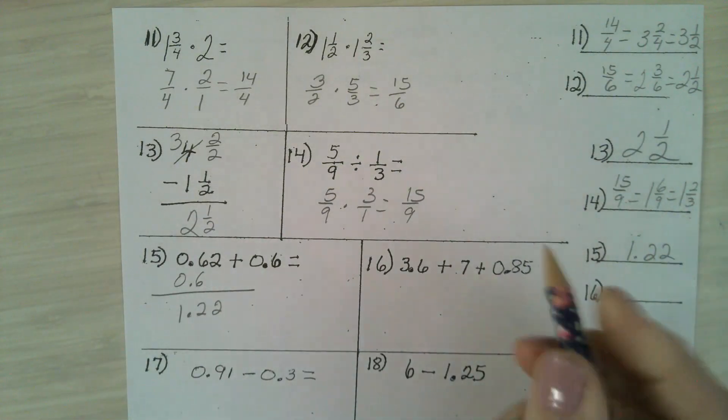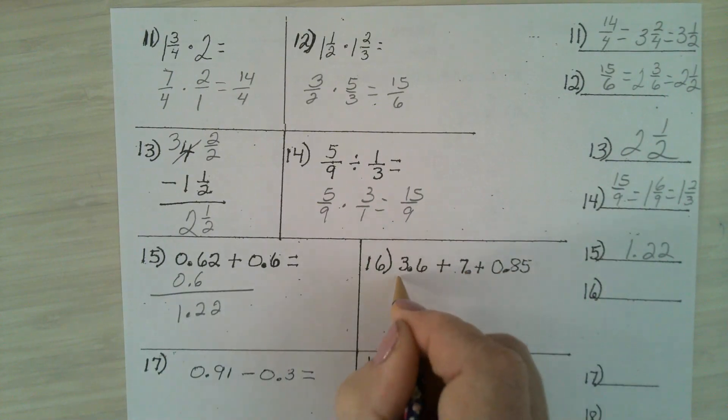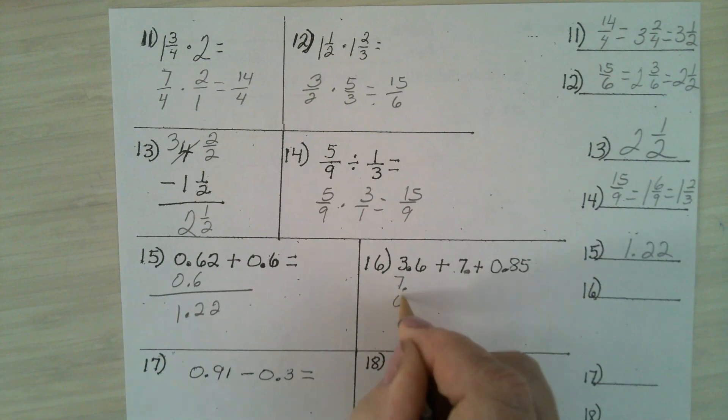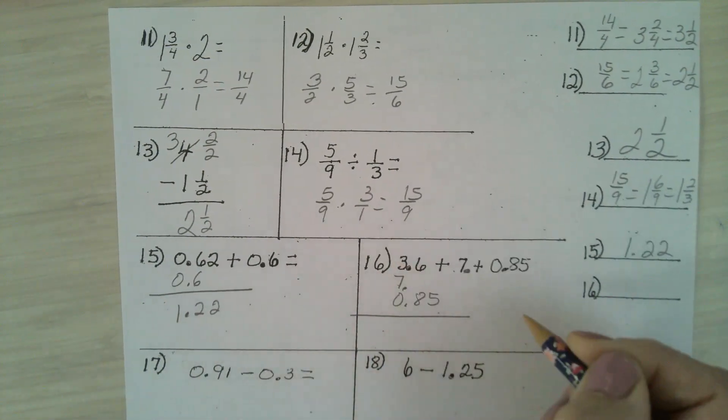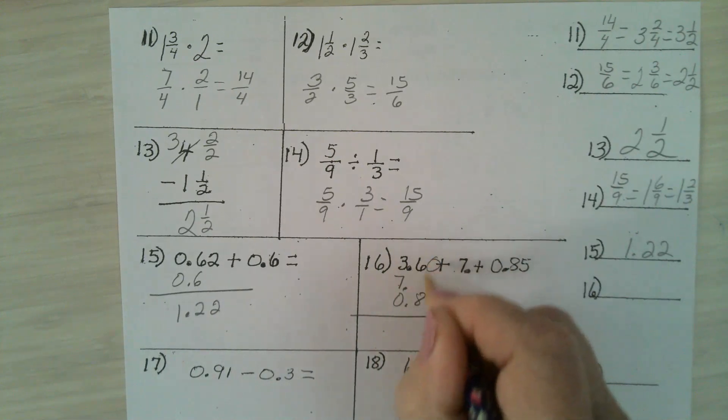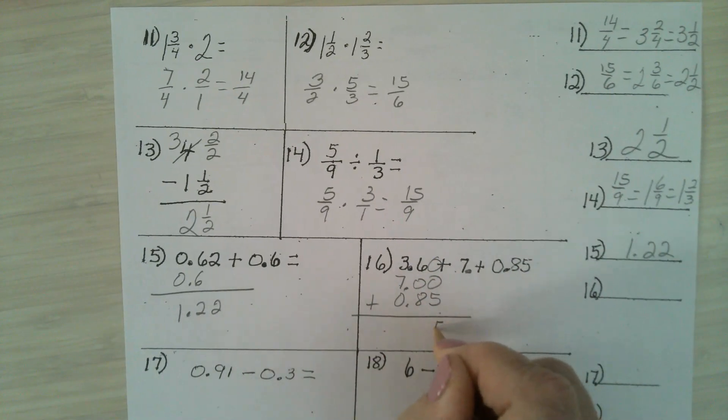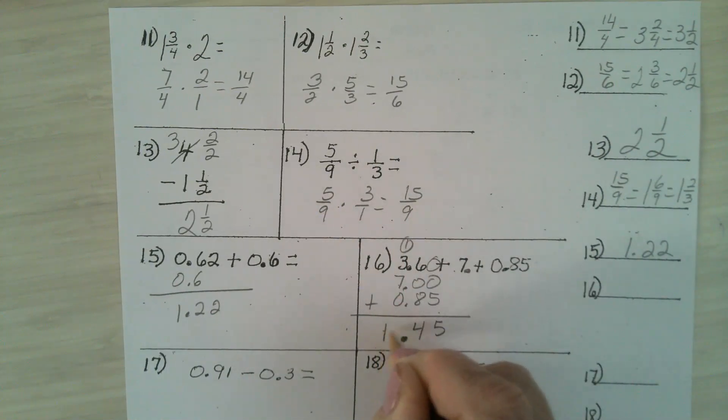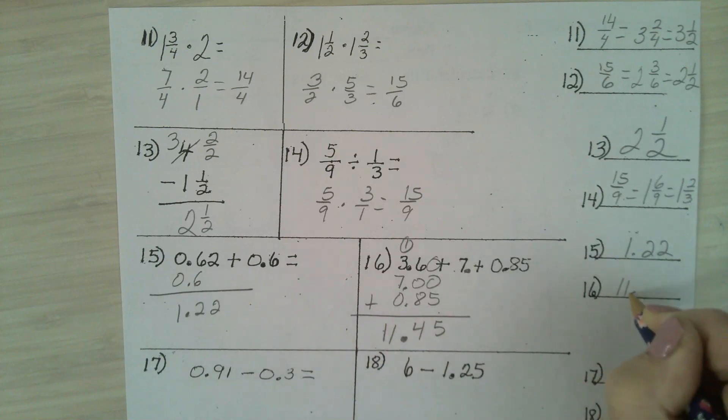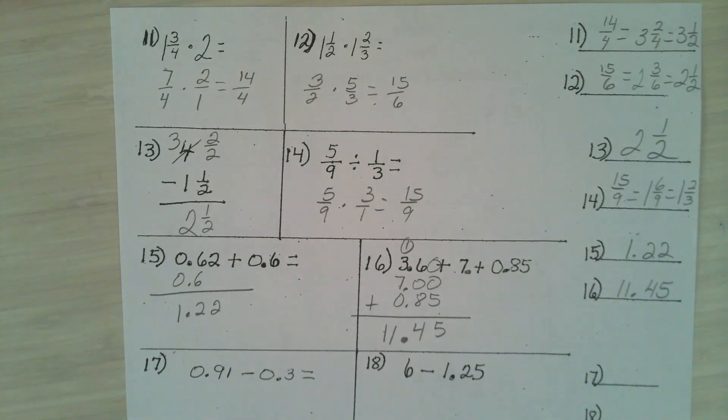Number 16. The 7, we'll put the decimal point behind it. It will go under the 3.6 and 0.85. Now I'm adding all three of those numbers together. You can put zeros in the empty spots to help you. 14 carry a 1. Don't forget your decimal point. And you have 11.45. Several of you did not put your 7 in the right spot. That's why you missed that one.